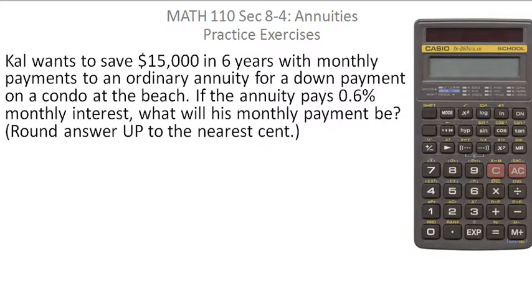Cal wants to save $15,000 in six years with monthly payments to an ordinary annuity for a down payment on a condo at the beach. If the annuity pays 0.6% monthly interest, what will his monthly payment be? Round the answer up to the nearest cent.